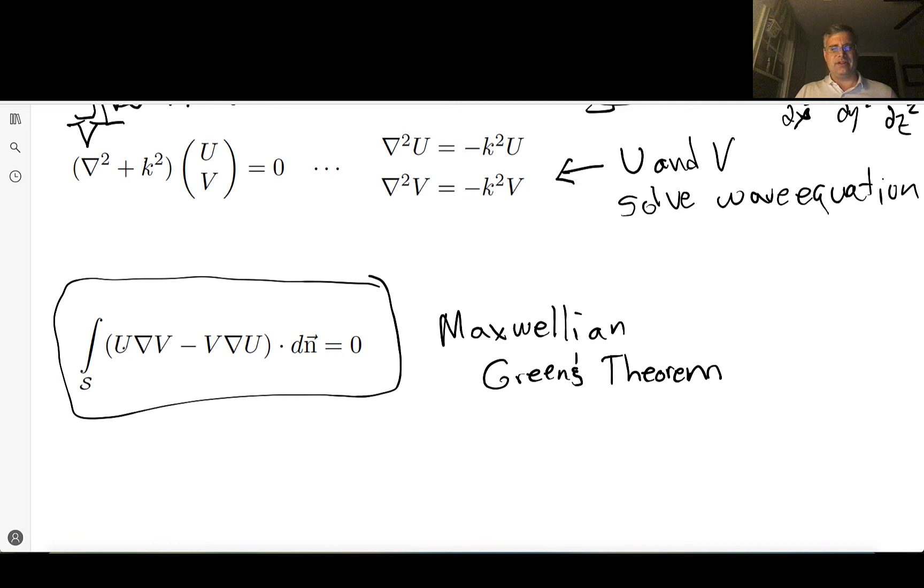So this says that if I have two fields that are Maxwellian, I take the field times the gradient of the second function and the second function times the gradient of the first function, subtract them, and that flux should always be equal to zero when I integrate across the entire closed surface. So let's see where that leads us.